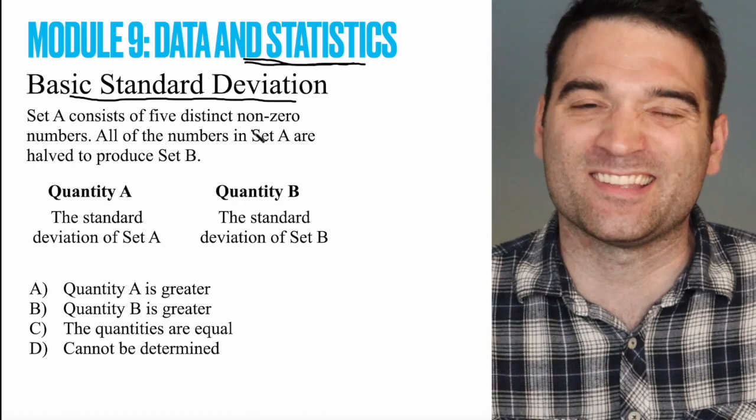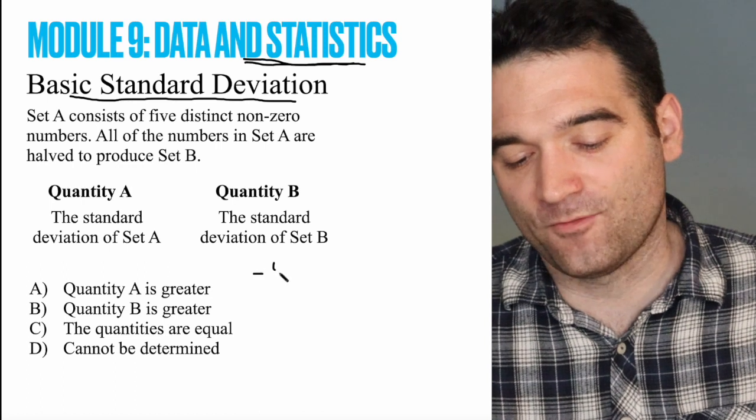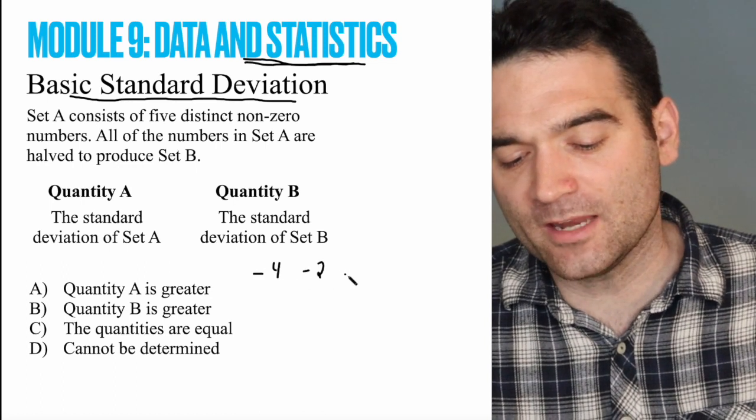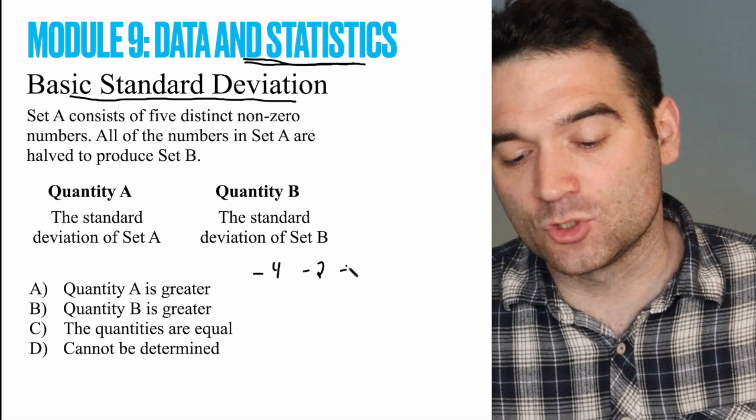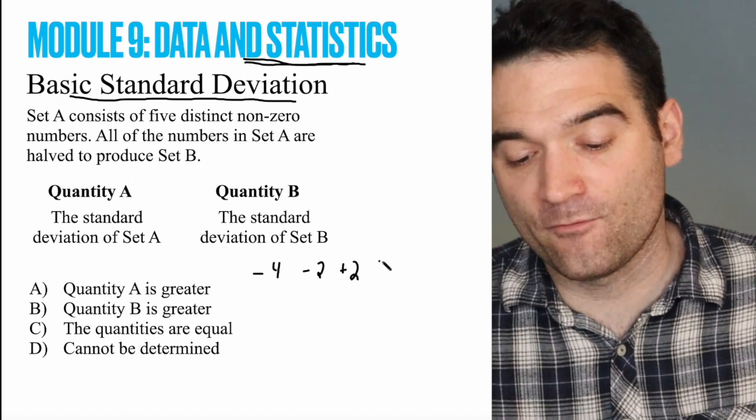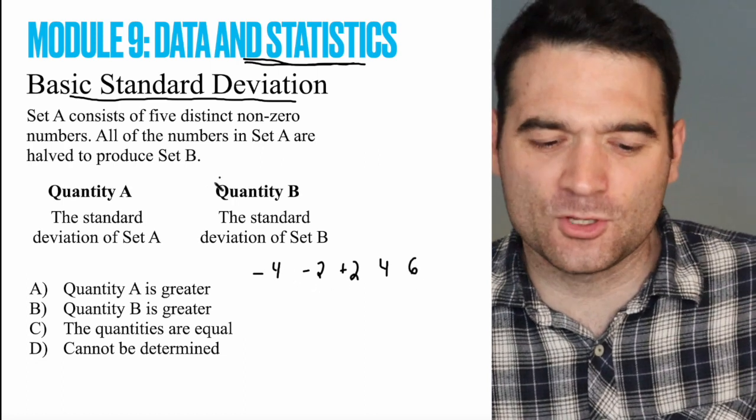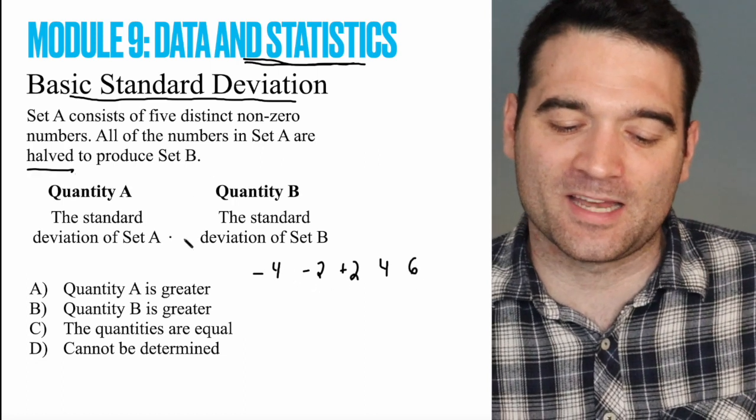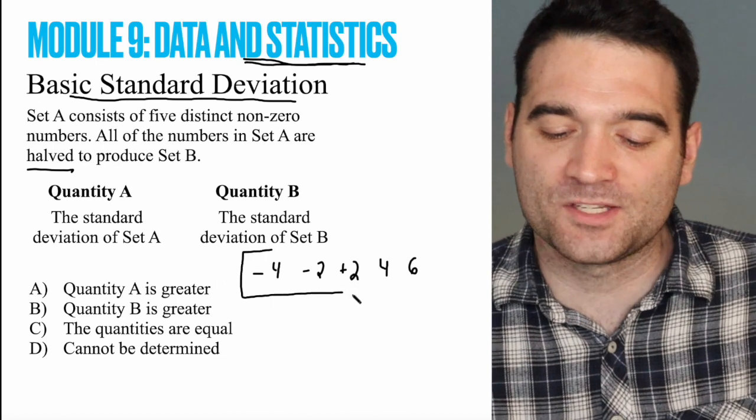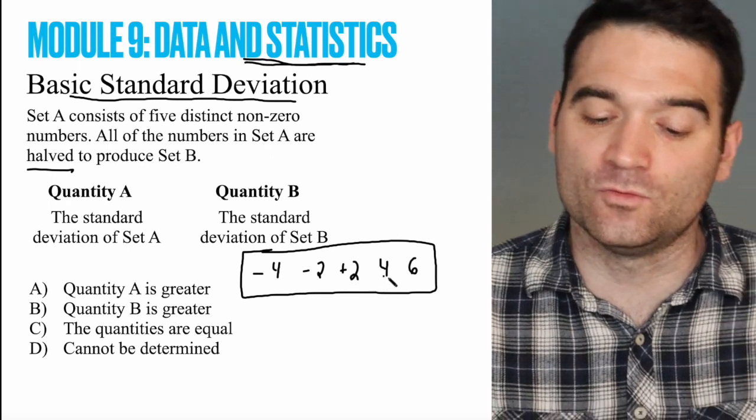So let's pick five distinct non-zero numbers. I'm going to say negative 4, negative 2, 2, positive 2, and 4 and maybe 6, right? And I'm using even numbers because I'm about to cut these in half. So this is set A. Set A consists of these five numbers, negative 4, negative 2, 2, 4, and 6.